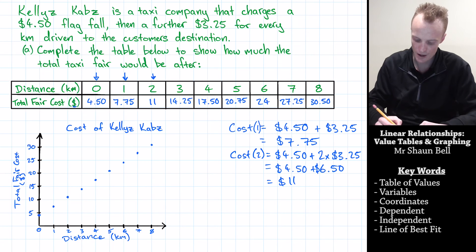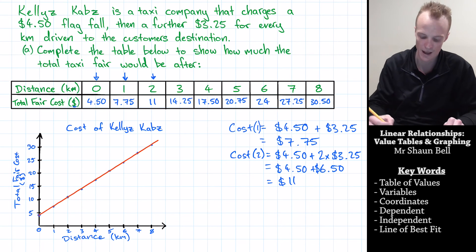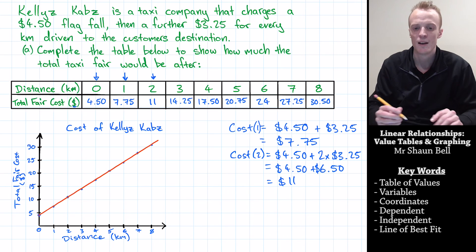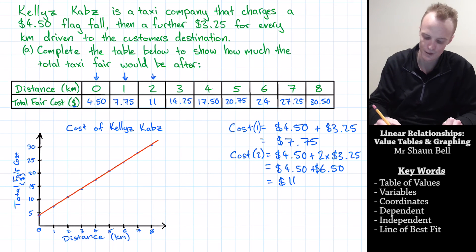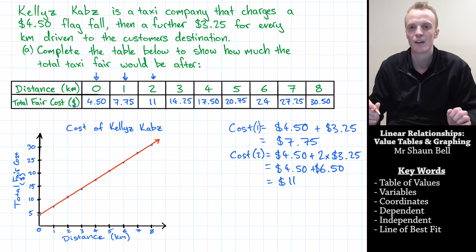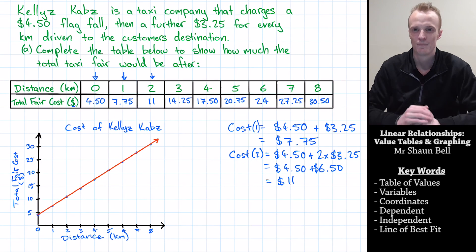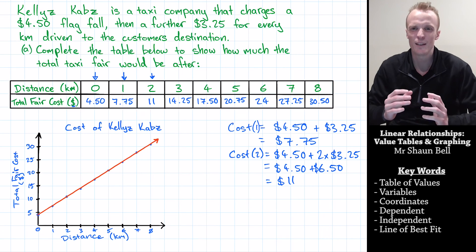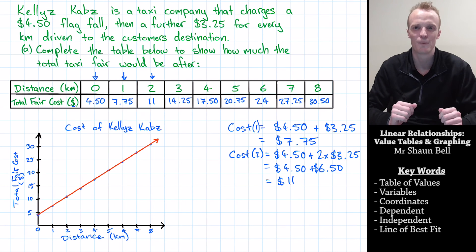So you get your ruler, and you connect a line through here, like I'm doing now, the best describes the set of coordinates you have. Now of course, you can go further than eight kilometres. So I need to indicate that with a little arrow at the end of my line of best fit. And now what we've done, we've successfully completed a graph for our table of values.